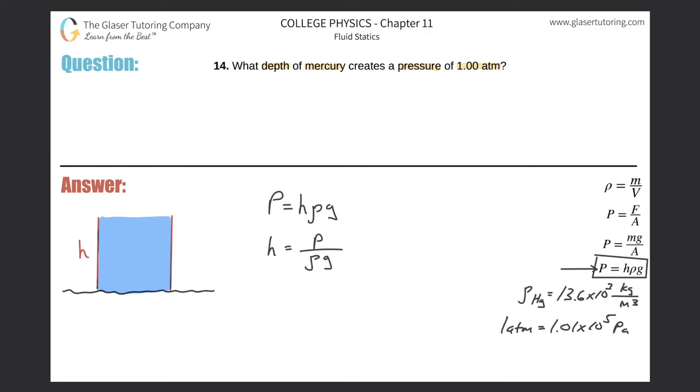We also need to know the density of the fluid. The fluid or the item that we're talking about here is mercury. So the density of mercury is 13.6 times 10 to the 3 kilograms per cubic meter. We need it in these units. So now when we go about and do our calculations, we can just plug everything in. It's fairly straightforward.